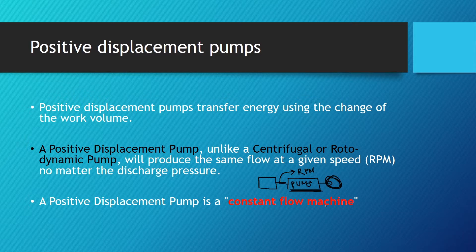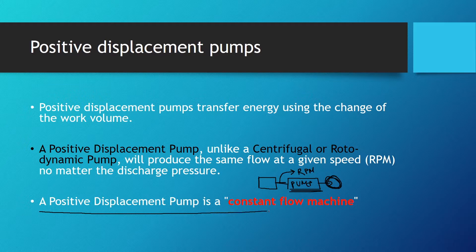It will always deliver the same flow, and that's why a positive displacement pump is called a constant flow machine.